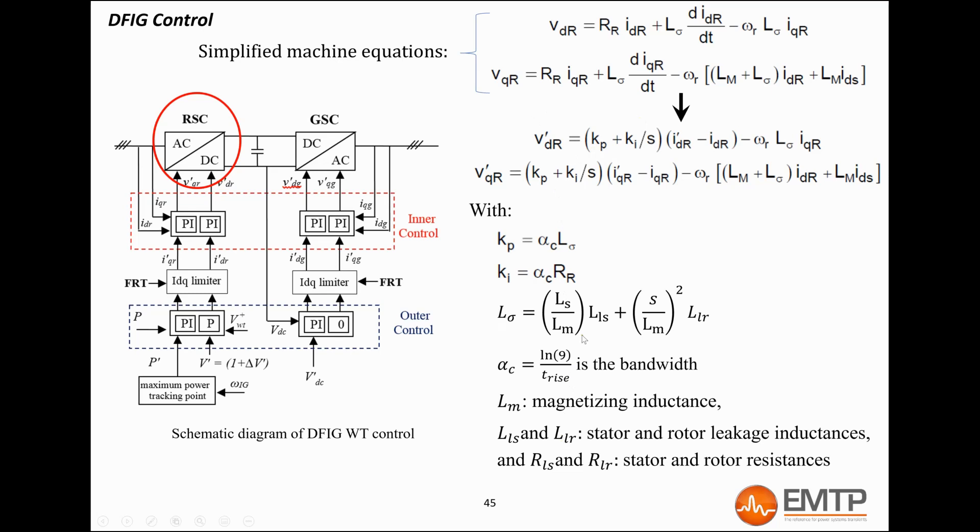In the generic model mask, user can set the rise time, which determines the inner loop speed. It is typically set to 20 milliseconds.